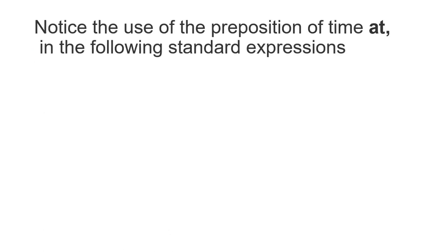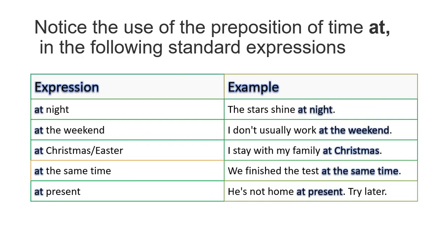Notice the use of the preposition of time 'at' in the following standard expressions. At night — for example: the stars shine at night. At the weekend — I don't usually work at the weekend. At Christmas or Easter — I stay with my family at Christmas. At the same time — we finished the test at the same time. At present — he is not at home at present.